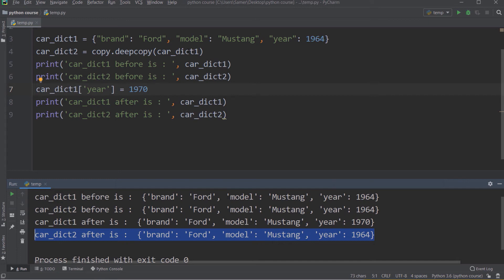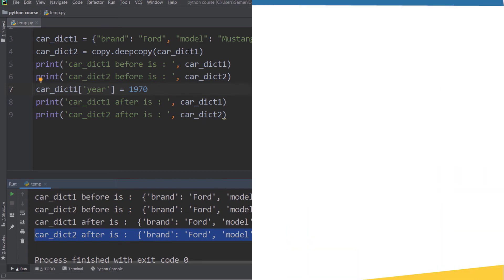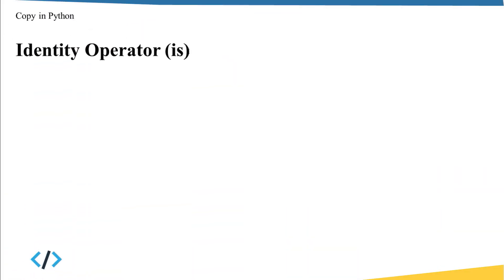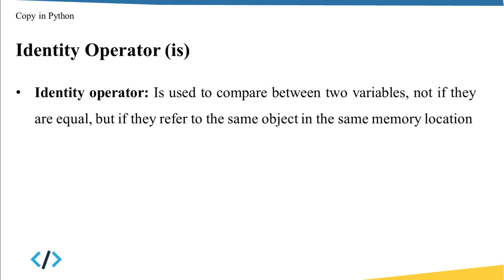You have to know that the concept of shallow copy and deep copy is applicable only for data structures that allow you to update the content — in other words, for mutable data structures. Now let's talk about identity operator. Sometimes, when you have a big program, you could be confused between two variables and not sure if one is a shallow copy or a deep copy of another. To solve this issue, Python has what we call the identity operator.